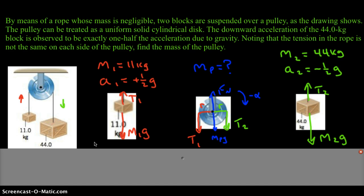It's a little bit different than problems where we could ignore the mass of the pulley before because the tensions in the problems are going to be unequal. What we can see is that this 44 kilogram crate is going to accelerate downward as the 11 kilogram crate accelerates upward and it's going to rotate this disc clockwise giving it a negative angular acceleration.